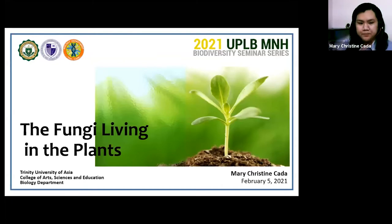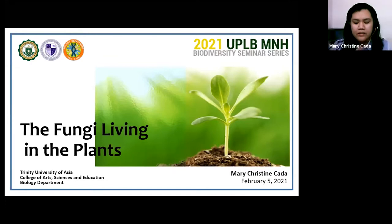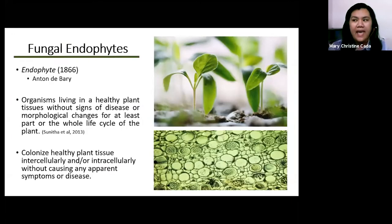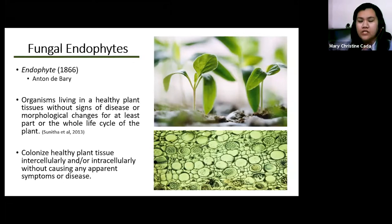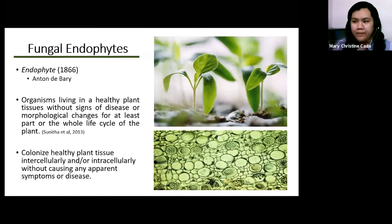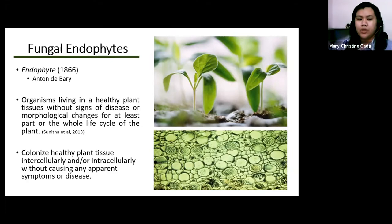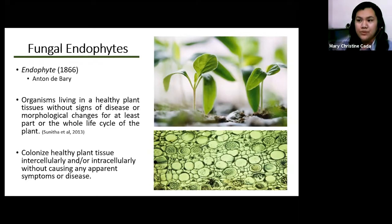As mentioned in the invitation, I'm going to discuss about the different biodiversity that can be found in plant tissues. We call these endophytes. Endophytes can be either bacteria or fungi. These microorganisms can live in healthy plant tissues without any signs of disease or morphological changes for at least part or the whole life cycle of a plant.